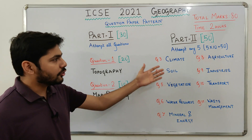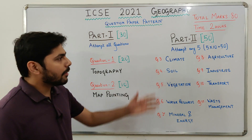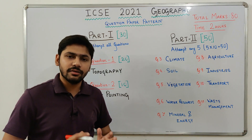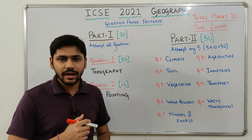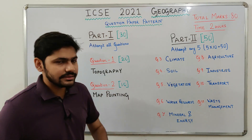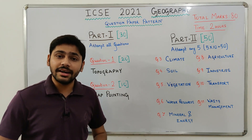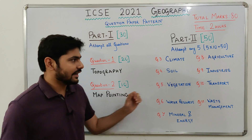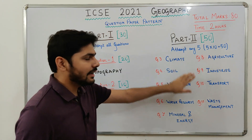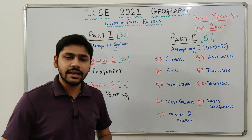Moving on to Part 2, the theoretical part of the geography paper. Part 2 is 50 marks, and this is where geography becomes very easy. Each question in Part 2 is asked from either a single chapter or a group of similar chapters, and you will have to attempt any 5 questions. Each question is 10 marks, so 5 into 10 gives you 50 marks.